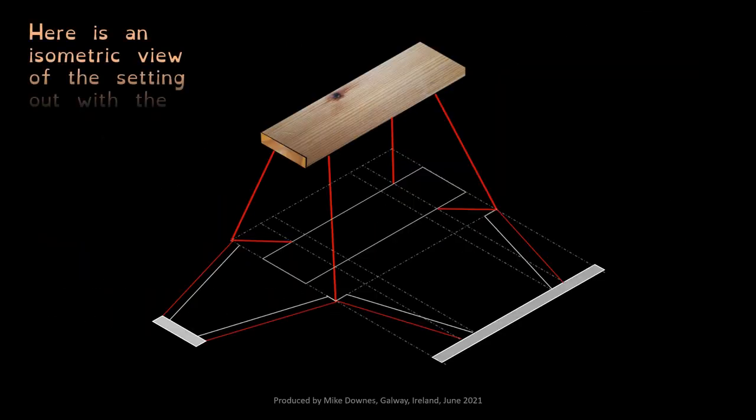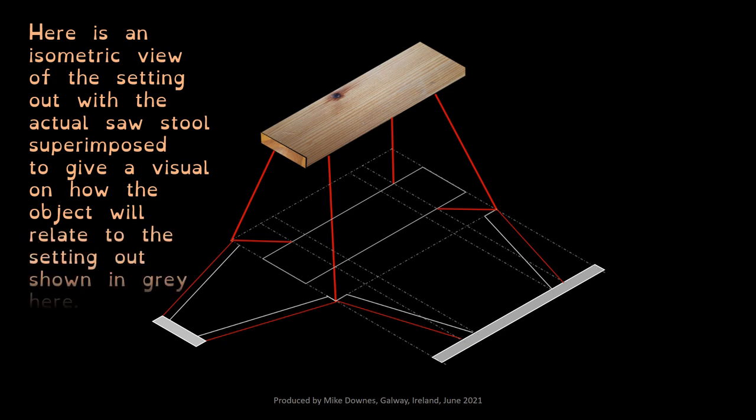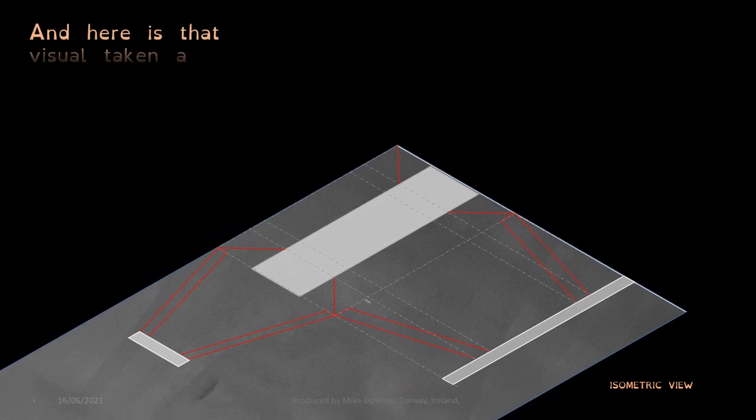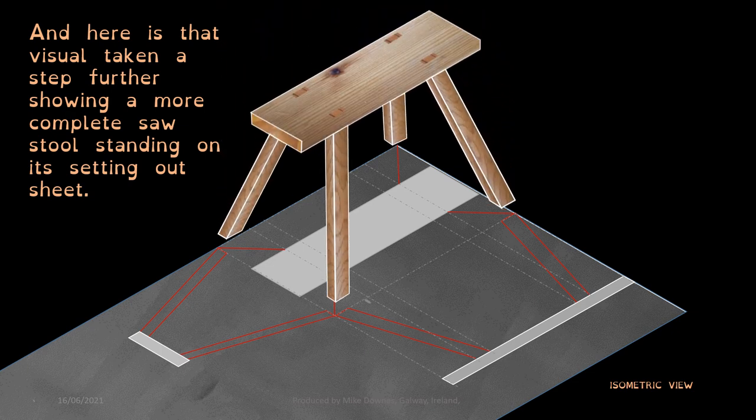Here is an isometric view of the setting out with the actual sawstool superimposed to give a visual on how the object will relate to the setting out. The sawstool's top is projected up from above the 2D plane that the plan, end view and elevation is drawn on. This shows a more complete sawstool standing on the setting out sheet shown in grey to help visualize where we are heading.